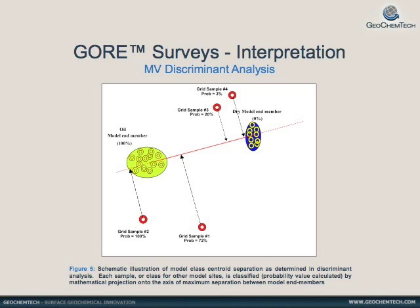Using either one or both interpretation methods, a probability map is created to identify areas of high hydrocarbon potential trapped in the subsurface. Only under very unique and controlled circumstances will the technology determine the quantity of trapped hydrocarbons.